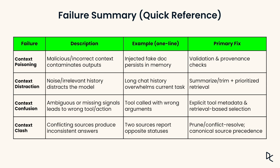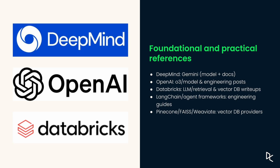Use this checklist when designing or auditing your systems. If you want to dive deeper, here are some sources: DeepMind for Gemini, OpenAI for models and engineering posts, and Databricks for retrieval and LLM ops. Always make sure you use official documentation and brand assets for up-to-date guidance.